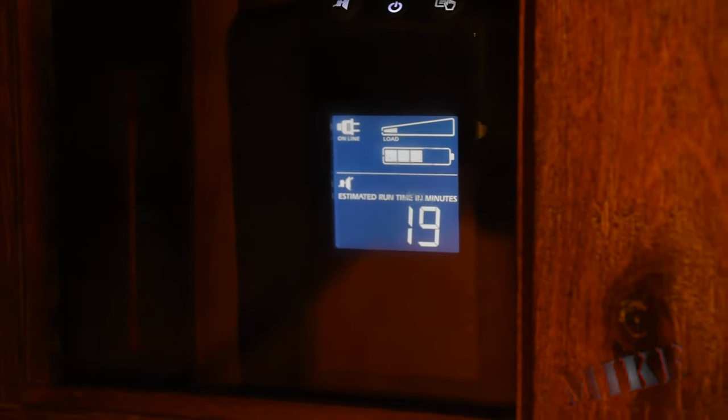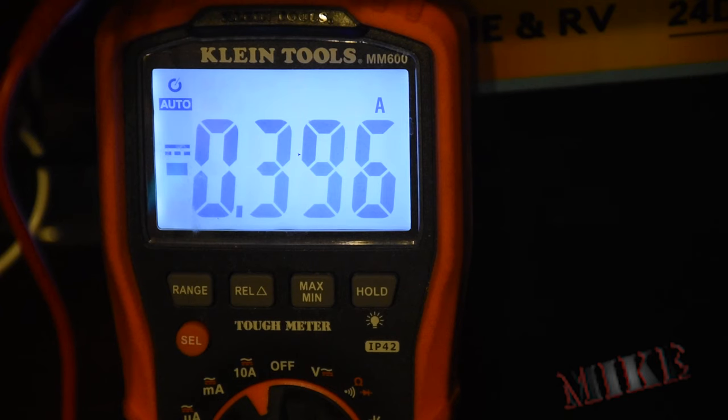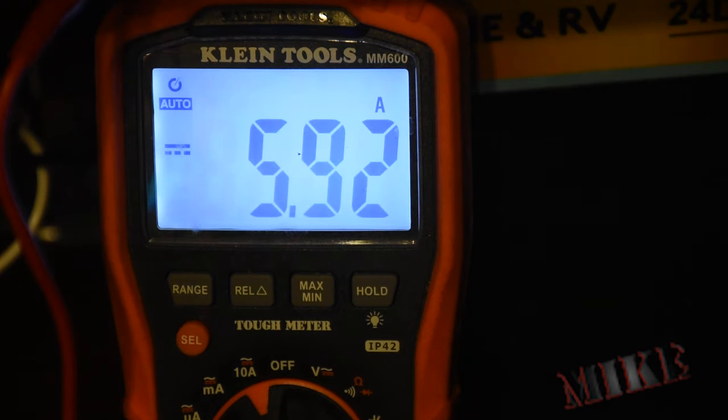We just won't obey the meter at the moment. We know that it's lying to us because the UPS really has no idea how big these batteries really are. Now on battery, it's pulling more amps than I expected, but still below the 10 amp fuse. So we're good.